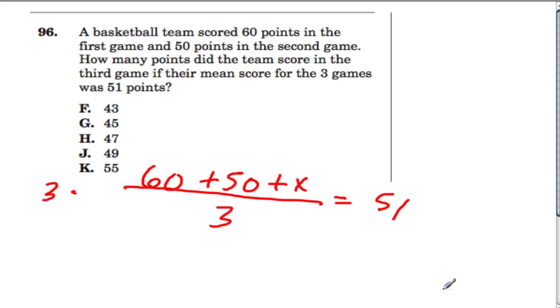So I'm going to solve for x. Multiply both sides by 3. 51 times 3 is 153. 3 times all this stuff and then divide it by 3 is just all this stuff times 1, so we don't need these numbers. 60 plus 50 is 110 plus x. Subtract 110 from both sides, and that tells us our third game would have been 43 points.